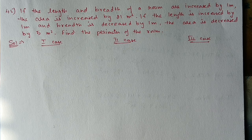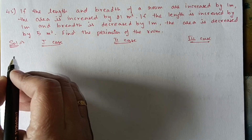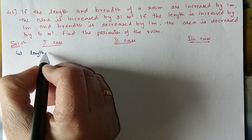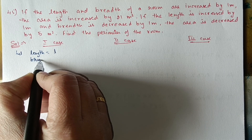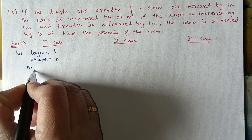Next, question number 45. If the length and breadth of a room are both increased by 1 meter, the area increases by 21 m². If the length is increased by 1 meter and breadth is decreased by 1 meter, the area decreases by 5 m². Find the perimeter of the room. We take three cases. Let length = l and breadth = b, so area A1 = l × b.